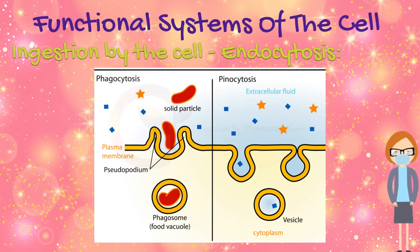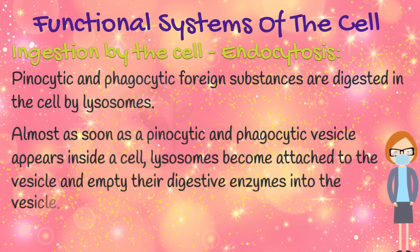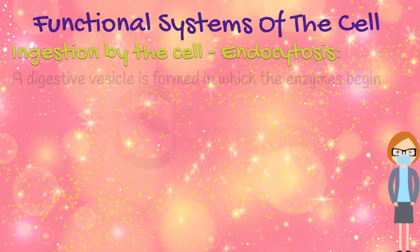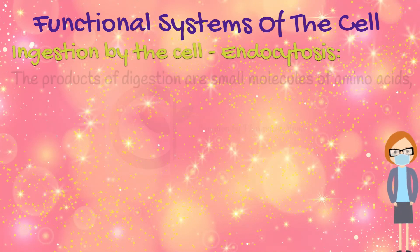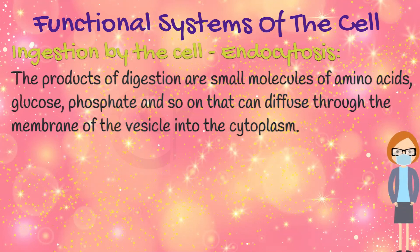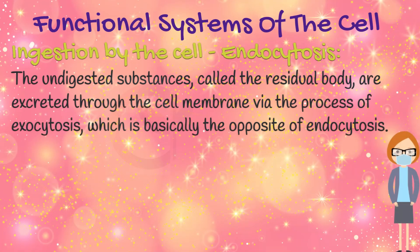Here is the diagram for the comparison between the two. Pinocytic and phagocytic foreign substances are digested in the cell by lysosomes. Almost as soon as a pinocytic or phagocytic vesicle appears inside a cell, lysosomes become attached to the vesicle and empty their digestive enzymes into it. A digestive vesicle is formed in which the enzymes begin hydrolyzing the proteins, carbohydrates, lipids, and other substances in the vesicle. The products of digestion — small molecules of amino acids, glucose, phosphate, and so on — can diffuse through the membrane of the vesicle into the cytoplasm. The undigested substances, called the residual body, are excreted through the cell membrane via exocytosis, which is basically the opposite of endocytosis.